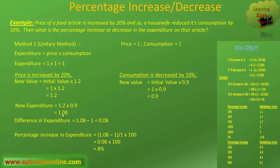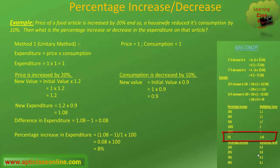Looking at the expenditure, it has increased from 1 to 1.08. Thinking in terms of multiplying factors, we can directly say there is an 8 percent increase in expenditure, since for 8 percent increase the multiplying factor is 1.08. Alternatively, we can calculate this using the conventional formula: percentage increase equals the difference between values divided by the initial value, multiplied by 100.